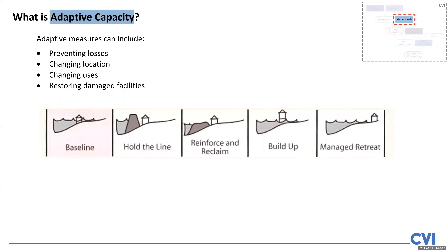On the left-hand side, we have a little structure on the coast with rising sea level impacting — that's our baseline. Looking at the various options on the right, the first one next to the baseline is about holding the line — building a big new structure to keep the sea level rise out. The next one is about reinforcing the area and reclaiming again to keep the water out. The next one involves building up the structure so that when the sea level comes in, it moves underneath and doesn't affect the structure. And the last one on the right-hand side is about actually relocating — what they call managed retreat — moving the entire structure away out of the sea level rise.